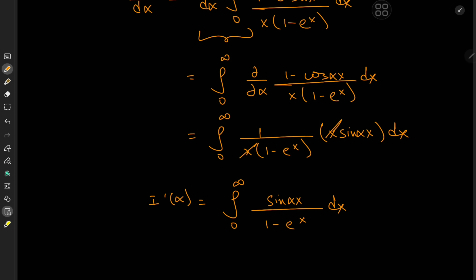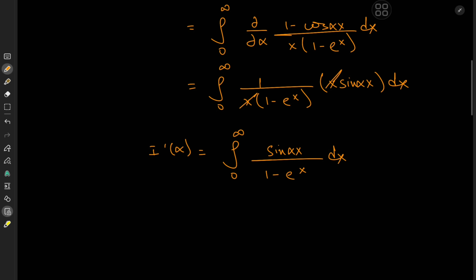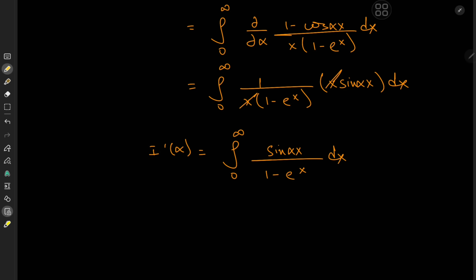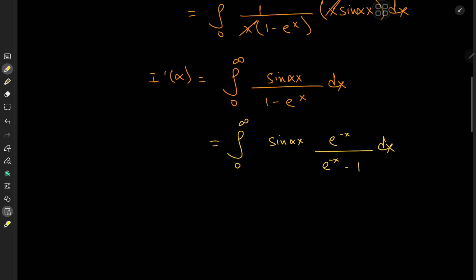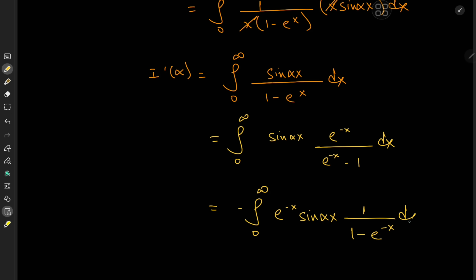This looks like a suitable candidate for a geometric series expansion. It's not convergent in this form, but we can fix that by multiplying numerator and denominator by e to the minus x. So we have the integral from 0 to infinity of sine(αx) times e to the minus x over (e to the minus x minus 1) dx, which we write as negative integral from 0 to infinity of e to the minus x times sine(αx) times 1 over (1 minus e to the negative x) dx.